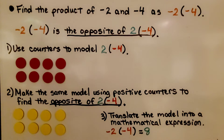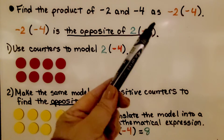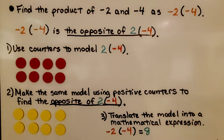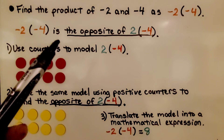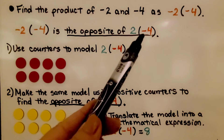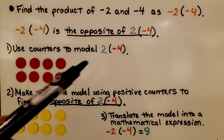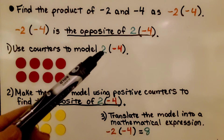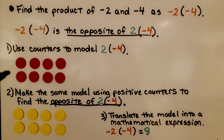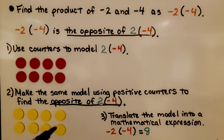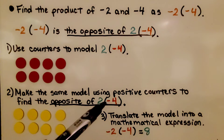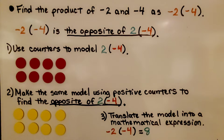Here we need to find the product of negative 2 and negative 4, written as negative 2 times negative 4. Negative 2 times negative 4 is the opposite of positive 2 times negative 4. We use counters to model the opposite: 2 times negative 4 gives us 2 rows of negative 4. We make the same model using positive counters to find the opposite, and negative 2 times negative 4 is equal to positive 8.